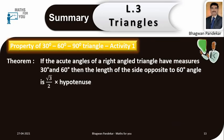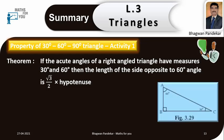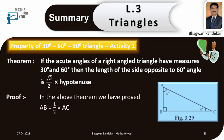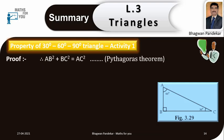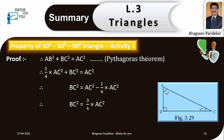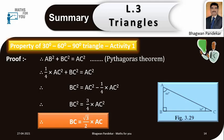Property of 30-60-90 degree triangle, Activity 1: if the acute angles of a right triangle have measures 30 and 60 degrees, then the length of the side opposite to the 60 degree angle is √3/2 times the hypotenuse. In the above theorem, we proved AB = 1/2 × AC. Using Pythagoras theorem: AB² + BC² = AC². Substituting: (1/4)AC² + BC² = AC². Therefore BC² = AC² − (1/4)AC² = (3/4)AC². Therefore BC = √3/2 × AC. Hence the proof.